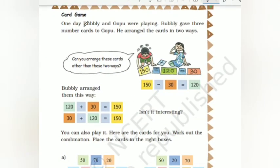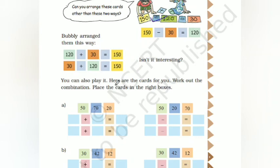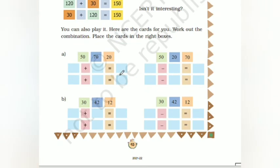Card game: one day Bubly and Gobu were playing. Bubly gave 3 number cards to Gobu. He arranged the cards in 2 ways. Can you arrange these cards? 150 minus 120 equals 30; minus is right. So 150 minus 30 equals 120. Bubly arranged them as: 120 plus 30 equals 150, or 30 plus 120 equals 150. Here are the cards for you: 50, 70, and 20. Work out the combination and place the cards in the right boxes.